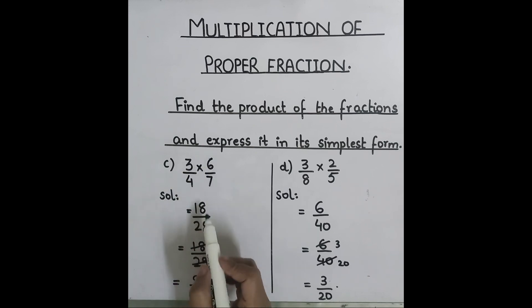Three into six is eighteen. Four into seven is twenty-eight. This fraction is not in its simplest form. Let's simplify it on the table of two. Two nine times eighteen and two fourteen times twenty-eight. So, nine over fourteen is the simplest fraction for this multiplication.